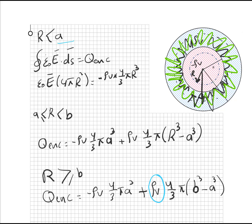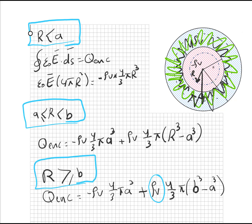فراح تكون ثلاثة مناطق نفس ما ذكرنا: المنطقة الأولى R أقل من A، المنطقة الثانية R أكبر أو يساوي A وأقل من B، والمنطقة الثالثة والأخيرة R أكبر أو يساوي B.